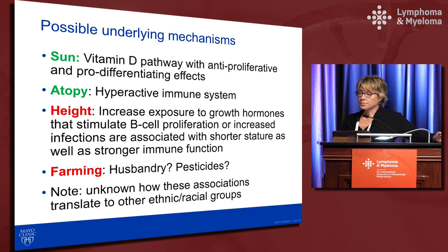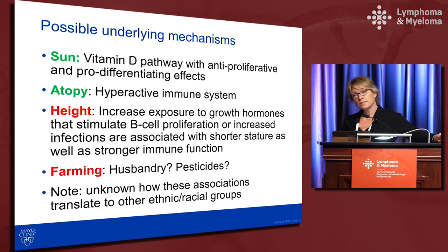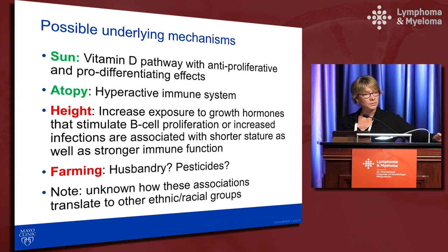Regarding underlying mechanisms: for sun, the hypothesis is the vitamin D pathway, since vitamin D has antiproliferative and pro-differentiating effects. For atopy, the hypothesis involves a hyperactive immune system. For height, either increased growth hormone exposure stimulates B-cell proliferation, or alternatively, increased infections during growth lead to a more strongly developed immune system. Farming is a consistent risk factor across many studies, though whether animals, pesticides, or something else drives the association remains unknown — smaller sub-analyses become underpowered.